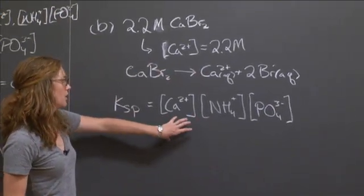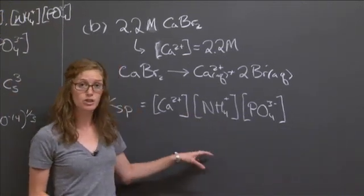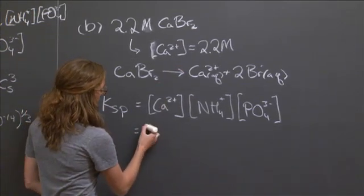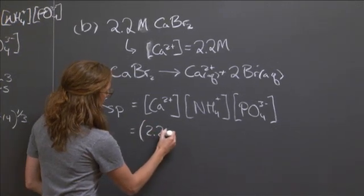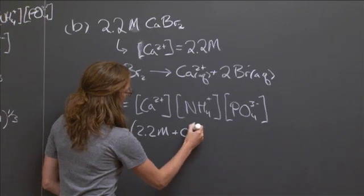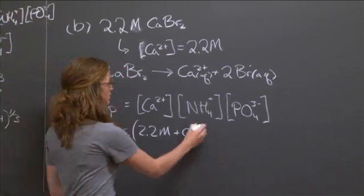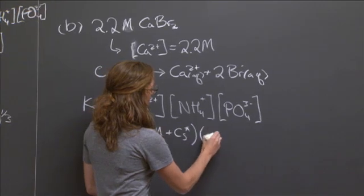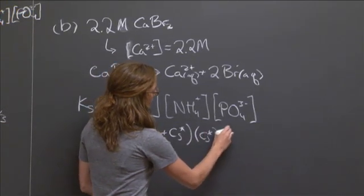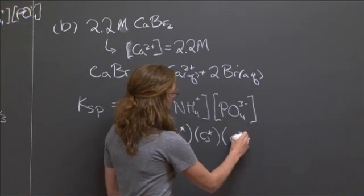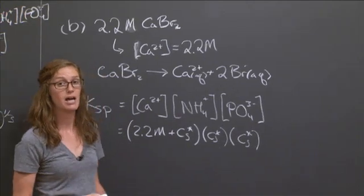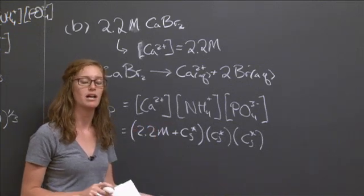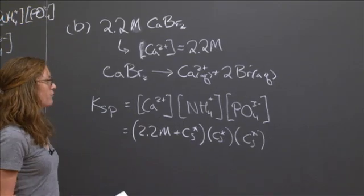But now, instead of having each of these be equal concentrations, we already have some calcium in the system. So we need to take that into account. And I'm going to call the saturation concentration C star because we're under different conditions. The calcium bromide does not contribute any ammonium or phosphate ions. So those concentrations will just be determined by how much of the calcium ammonium phosphate dissolves.